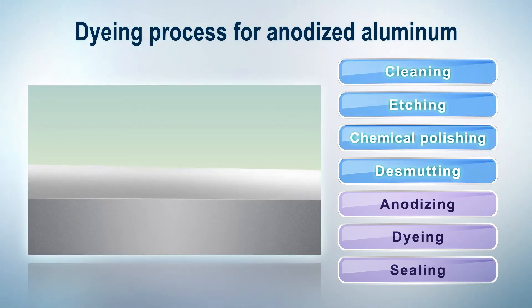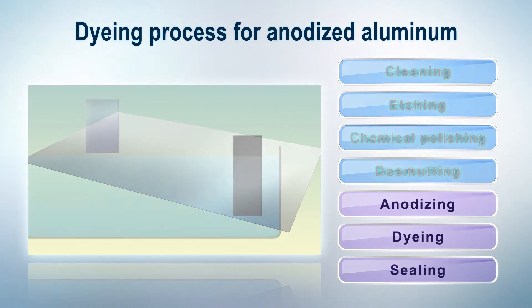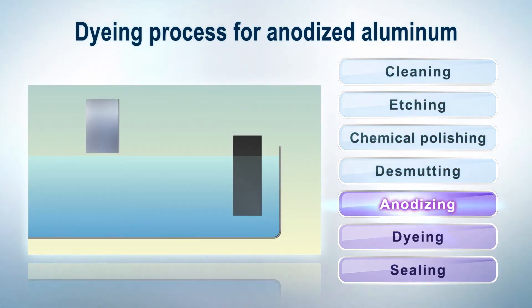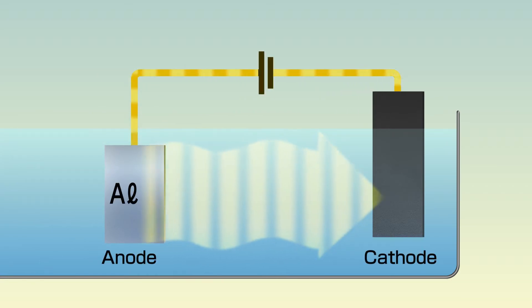After the pre-treatment process is completed, the anodizing process begins. Let's take a look at the anodizing process. First, aluminum substrates are dipped into an anodizing bath and electrolysis begins. Through electrolysis, aluminum oxide barrier layers form on the surface of the aluminum. The oxide films then grow on the surface.